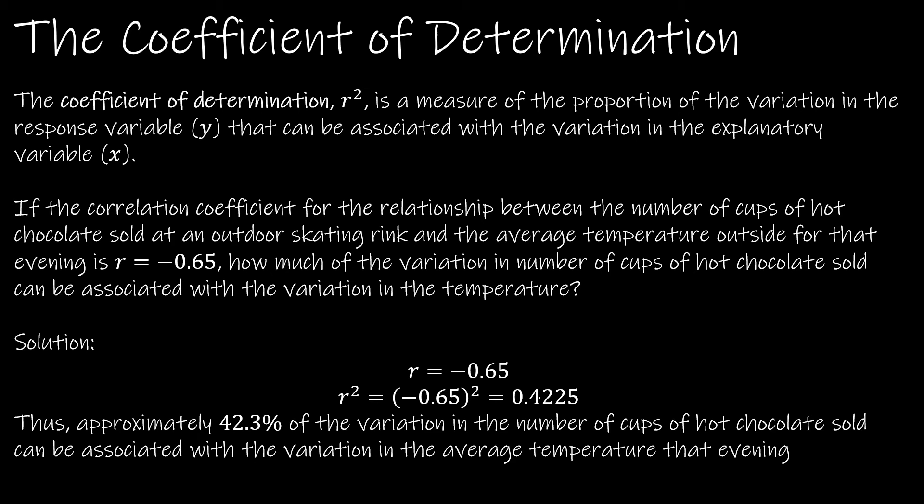That's less than half. So what else might be determining the changes in the average number of hot chocolate sold? Well, we don't know and we don't have to know, which is the good thing. All we need to know is that 42.3% of those changes are accounted for by the changes in the temperature.